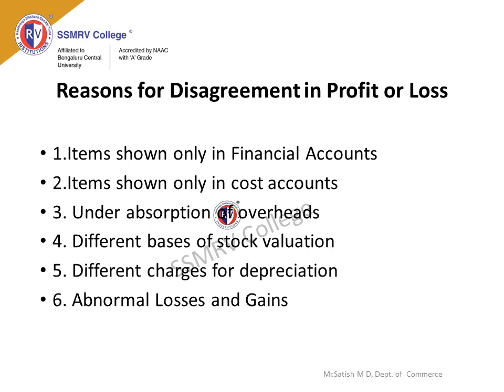Another reason is different charges for depreciation. There are chances where depreciation will be recorded differently in Cost Accounts as well as in Financial Accounts, which may lead to a difference in profit. The last reason behind this difference is abnormal losses and gains. Different items of abnormal wastages, losses, or gains which are included in Financial Accounts but are not recorded in Cost Accounts mean that figures of abnormal losses and gains may affect the results in Financial Accounts alone.